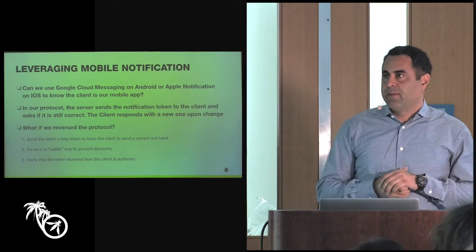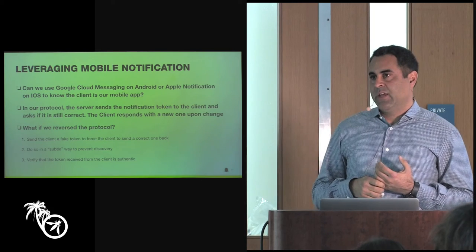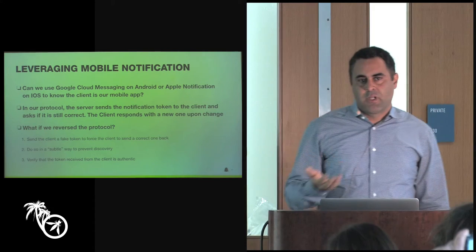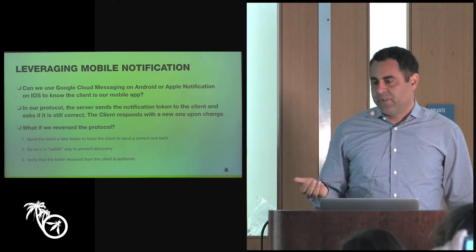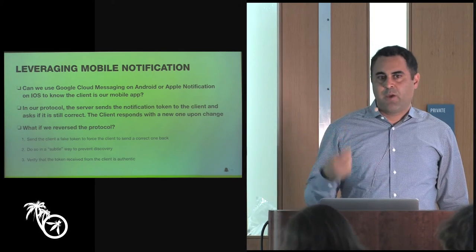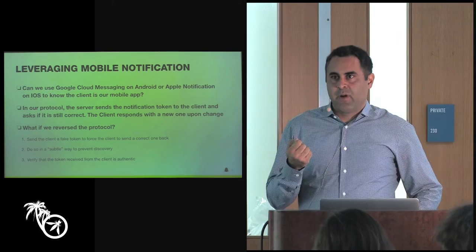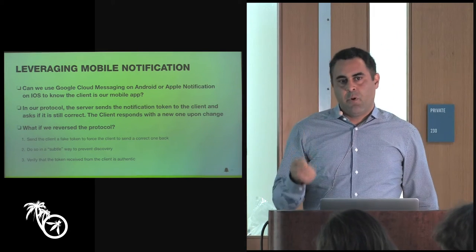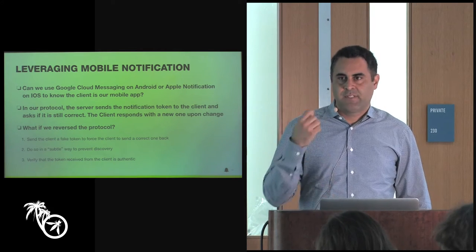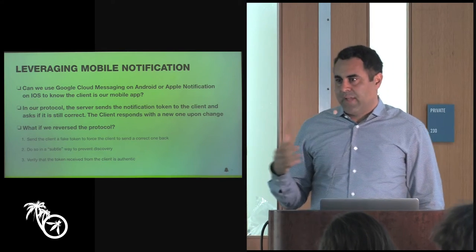Getting more serious: one defense we thought of was leveraging mobile notifications. On Android this is Google Cloud Messaging; on iOS it's the Apple Push Notification Service. Could we use that to better ascertain that requests are coming from our app and not some other app? In other words, can we check that the mobile client is getting valid notification tokens and can we verify they came from our app?